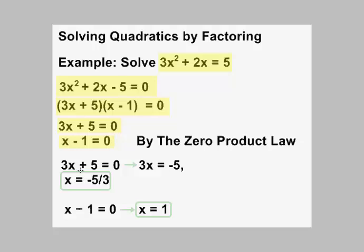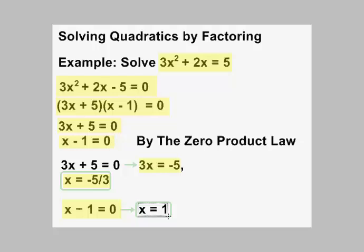Now we solve each of these equations. 3x plus 5 equals 0 is solved by subtracting 5 from both sides — the subtraction property of equality — giving us 3x equals negative 5, and then dividing both sides by 3 — the division property of equality — giving us x equals negative 5 thirds. Our other equation, x minus 1 equals 0, is solved simply by adding 1 to both sides, and we get x equals positive 1.